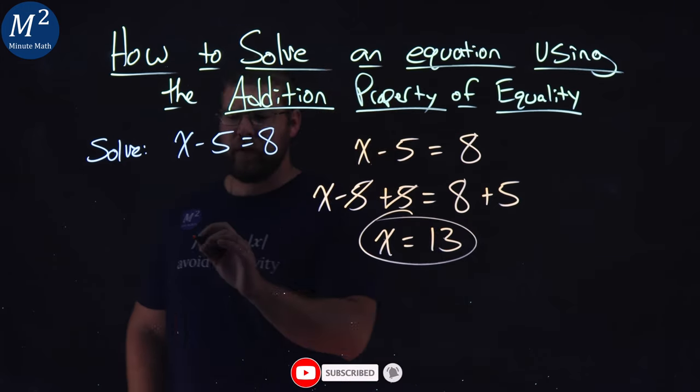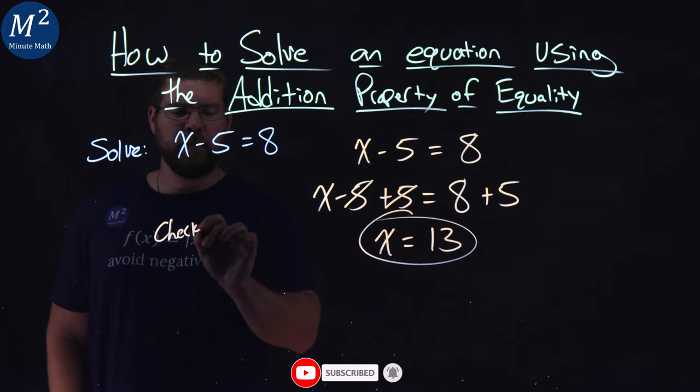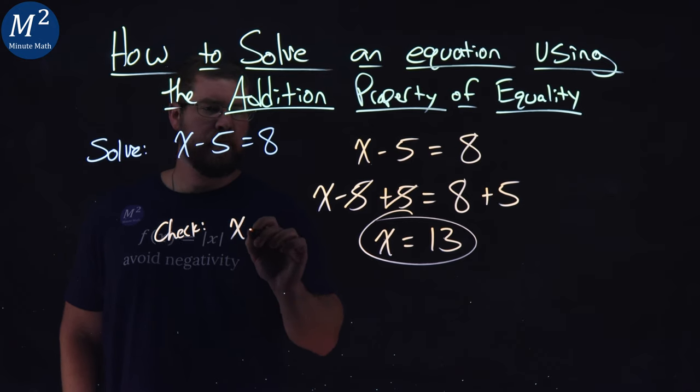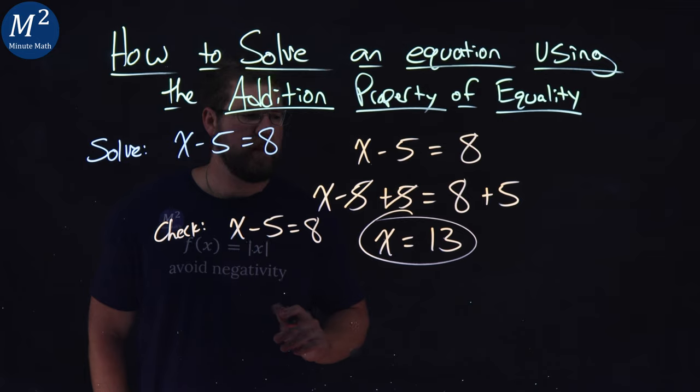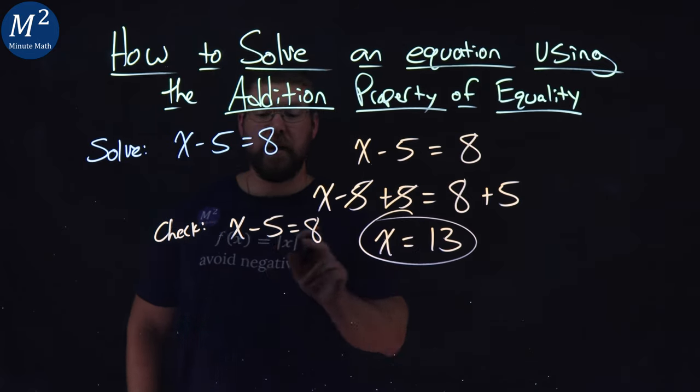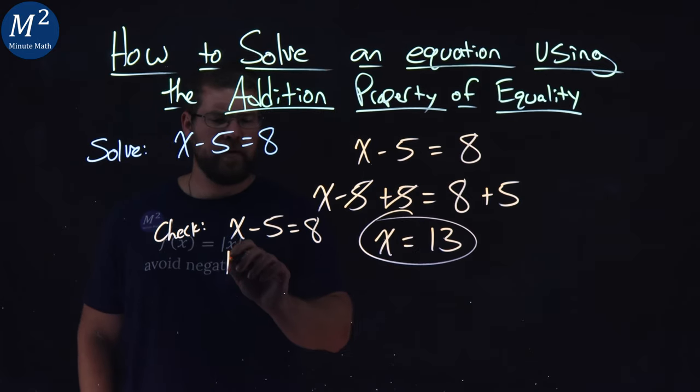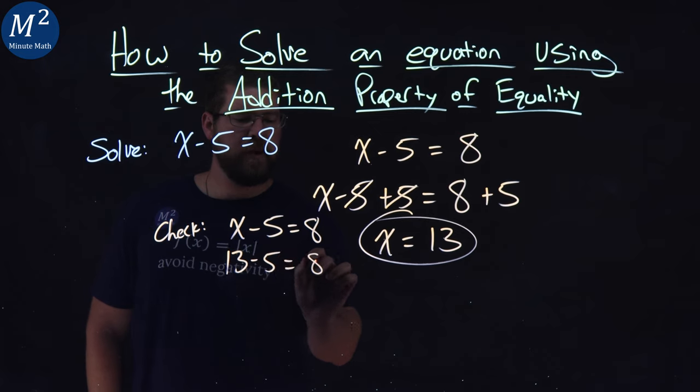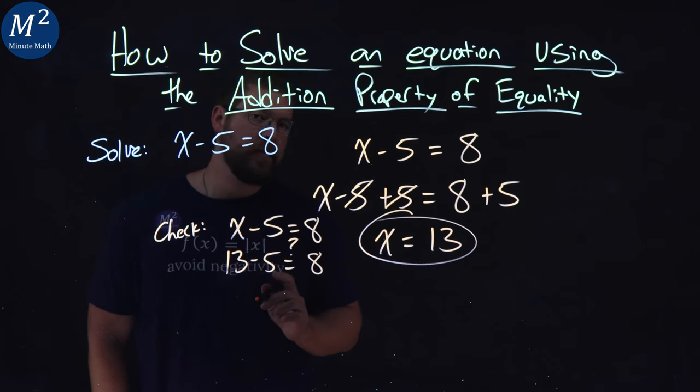Now, let's check this. So if I check it here, what I want to do, I'm going to rewrite my equation, x minus 5 equals 8. I'm then going to take this 13 and plug it in for x. 13 minus 5 equals 8. I want to see if this is true. Is the left and right-hand side, are they equal?